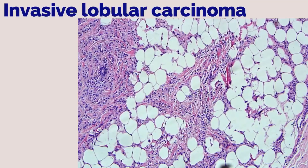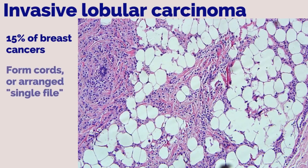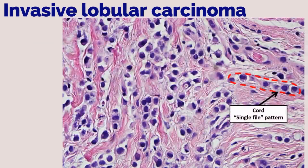Invasive lobular carcinoma accounts for 15% of all breast cancers. Neoplastic cells usually form cords or are arranged in a single-file orientation, which can be seen on higher power. Greater than 90% are ER positive.